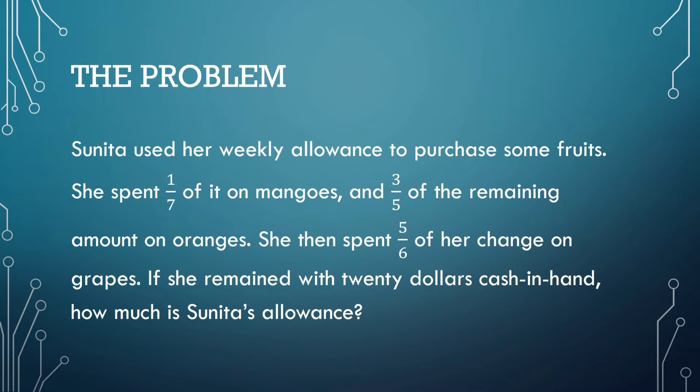Sunita used her weekly allowance to purchase some fruits. She spent 1/7th of it on mangoes and 3/5th of the remaining amount on oranges. She then spent 5/6th of her change on grapes. If she remained with $20 cash in hand, how much is Sunita's allowance?